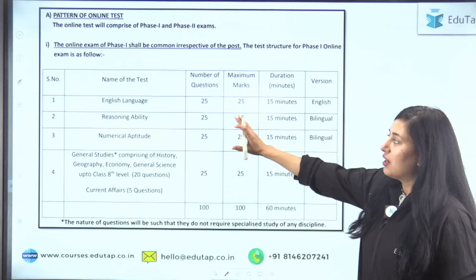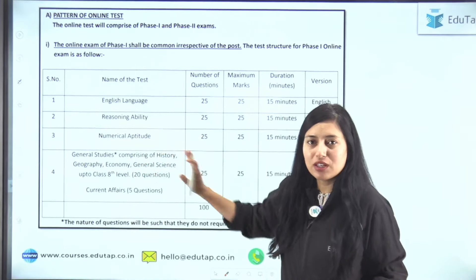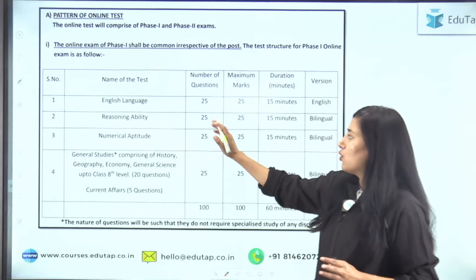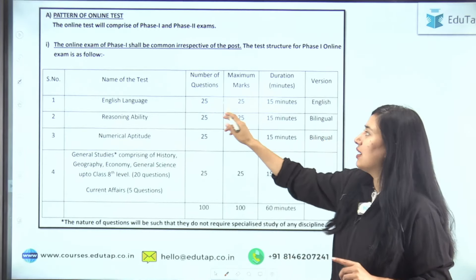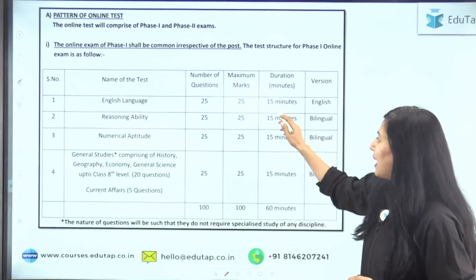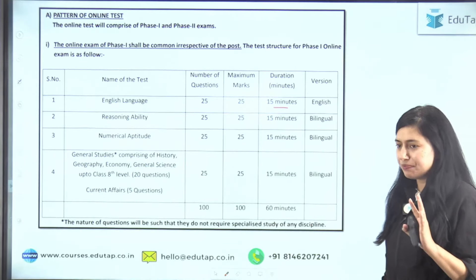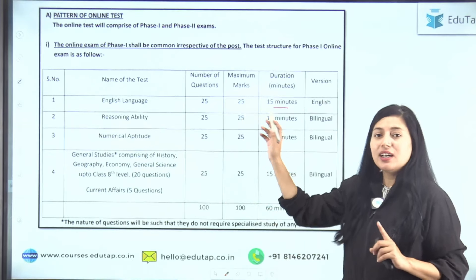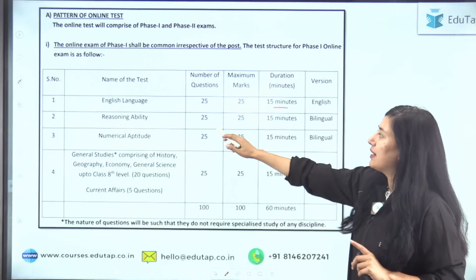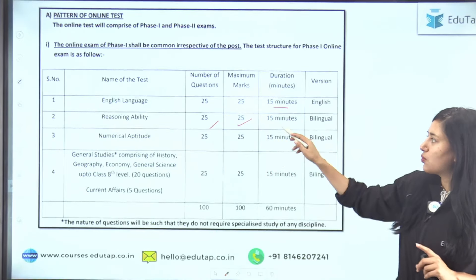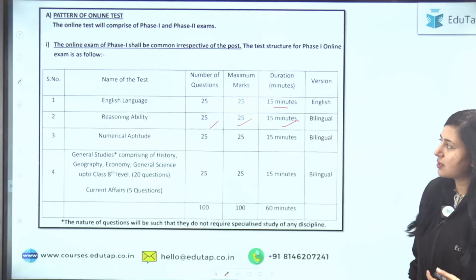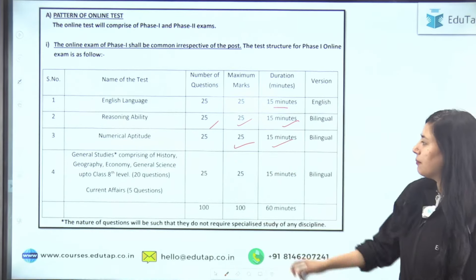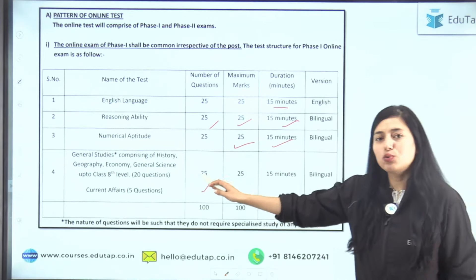Phase 1 mein aapka English, Reasoning, Numerical Aptitude se questions honge. Then aapka GS aur GA — that is Current Affairs — woha se questions honge. English ke questions honge 25, maximum marks 25, aur time duration 15 minutes ka milega. There is a sectional timing here. Aapko 25 questions karne hai 15 minutes mein. Then Reasoning Ability — again 25 questions, 25 marks, 15 minutes. Similarly, Quants mein bhi 25 questions, 25 marks, 15 minutes ke liye hai.